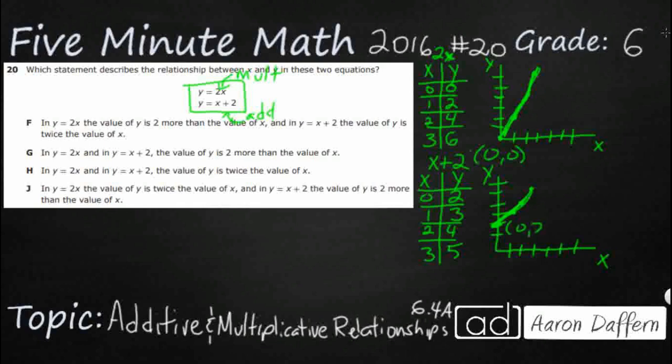So how can we describe the difference between these two equations? Well, you notice that in this one we had 2 times x up in the top, and the bottom one was x plus 2. So let's look at some of our answers here. In y equals 2x, the value of y is 2 more than the value of x. No, this actually describes this one down here. And in x plus 2, the value of y is twice. Now that actually looks like the exact opposite of what we want.